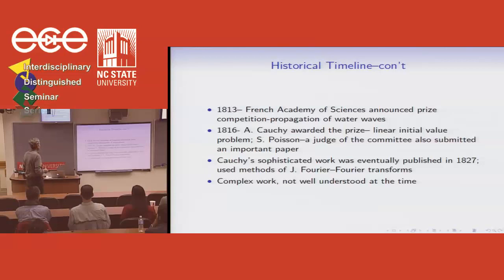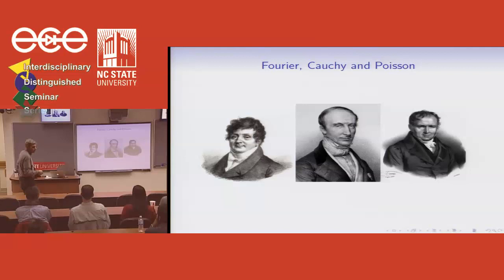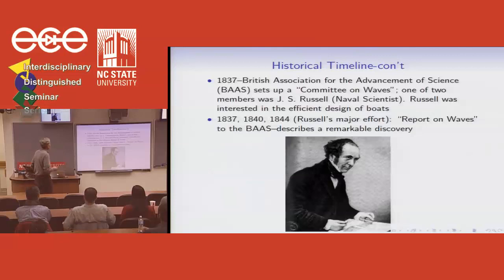At any rate, in 1816, Cauchy was awarded the prize for solving the initial value problems. And, of course, he had to use some nontrivial math, and he used Fourier's work. And it was probably one of the early applications of Fourier transforms. And there is Cauchy with Fourier and Poisson. Poisson was a judge on the committee, and he wrote papers as well, submitted it to the committee. I don't understand how that works. You're a judge on the committee, you submit a paper, which isn't accepted. Well, I guess he had some ideas and he wanted to get it out.